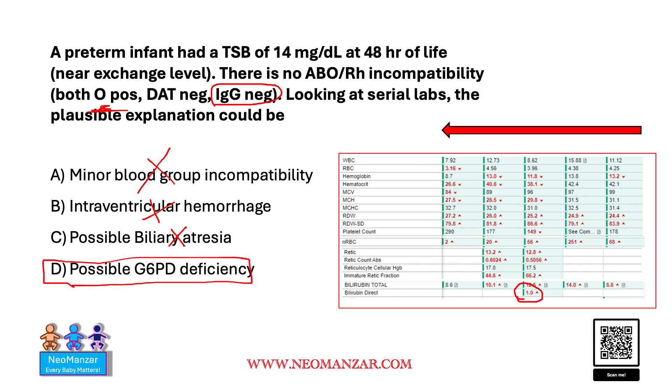Whenever we have a case with sudden onset of hyperbilirubinemia with signs of hemolysis — as evidenced by high nucleated RBC and especially the retic count — and if there is no ABO incompatibility, always think of enzyme deficiencies in the red cells. The correct response was possible G6PD.